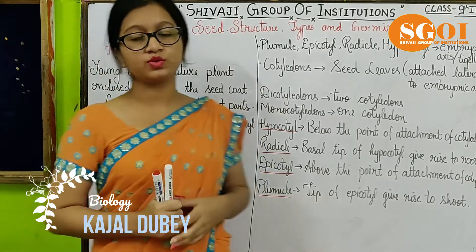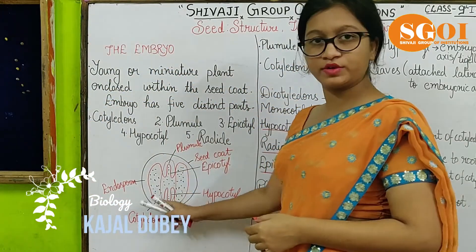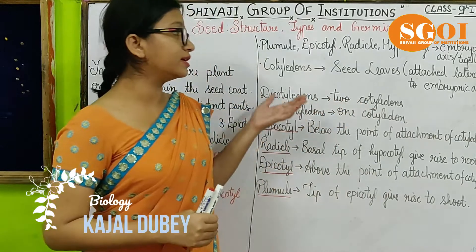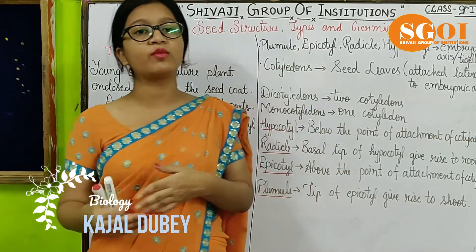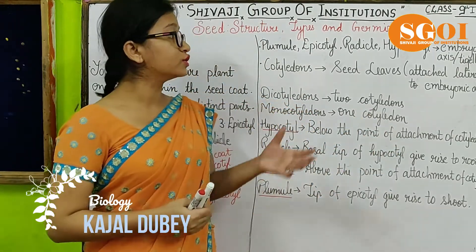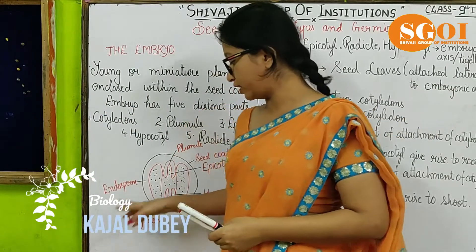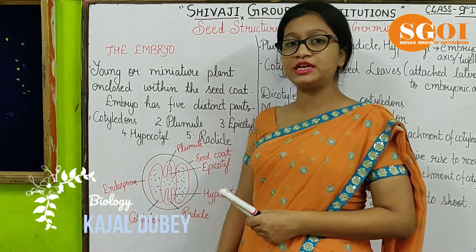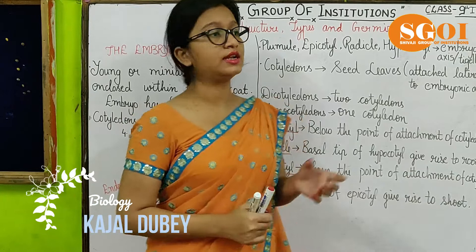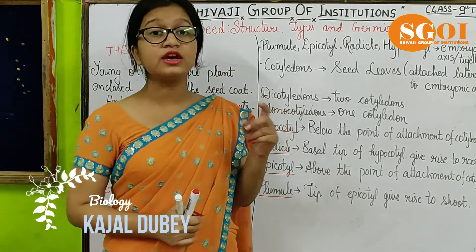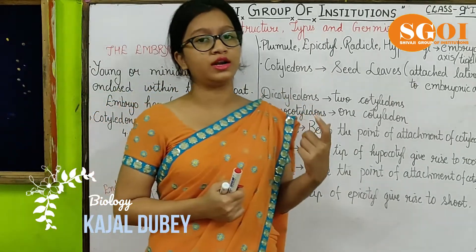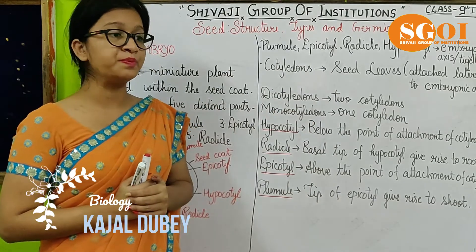The second important structure is the cotyledons. Cotyledons are the two parts present laterally on the embryonic axis. They are known as seed leaves because they perform a similar function to what leaves perform for the plant. These seed leaves are attached laterally to the embryonic axis. There are two types of cotyledons: dicotyledons, when two cotyledons are present in the seed, and monocotyledons, when only one cotyledon is present.